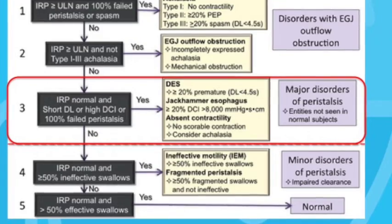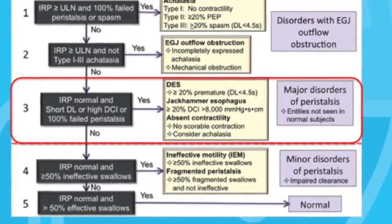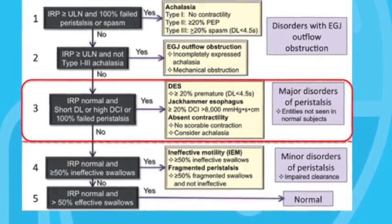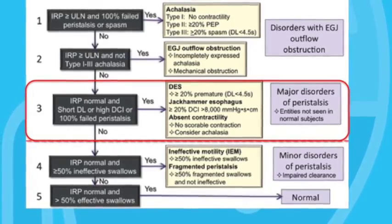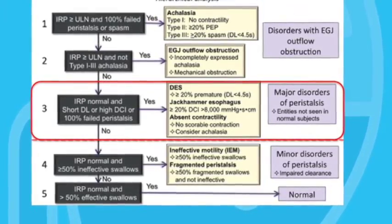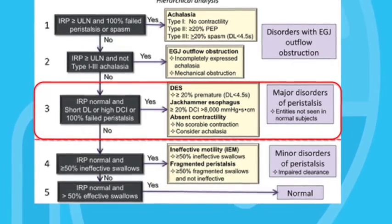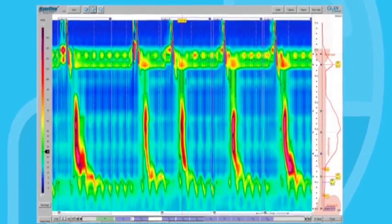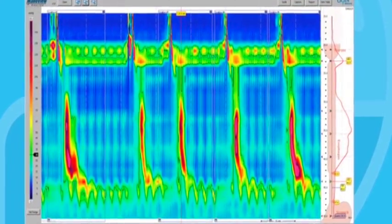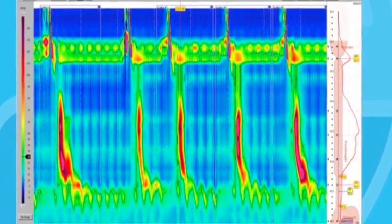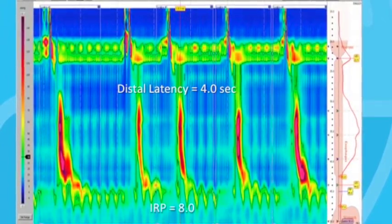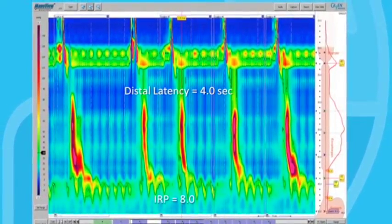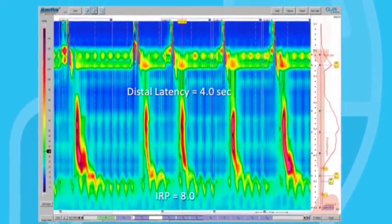If the IRP is normal, it leads us to step three of the analysis — the disorders of esophageal body peristalsis. A short distal latency in more than 20% of swallows is diagnostic of diffuse esophageal spasm. For example, in this tracing it does appear that the peristaltic contractions are rapidly conducted down the esophagus. If we apply the motility metrics, we see that the distal latency in all of these swallows is less than four seconds, which is diagnostic of diffuse esophageal spasm.